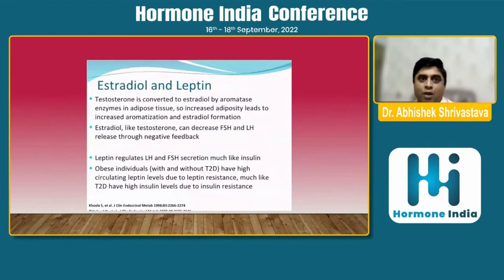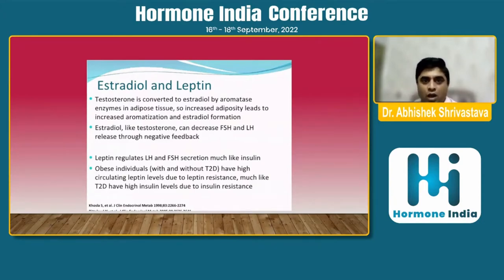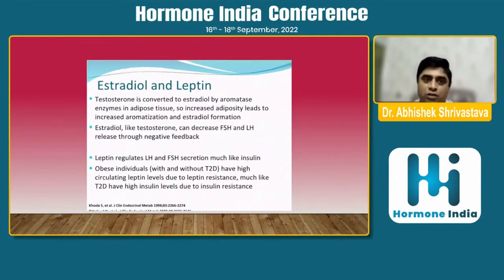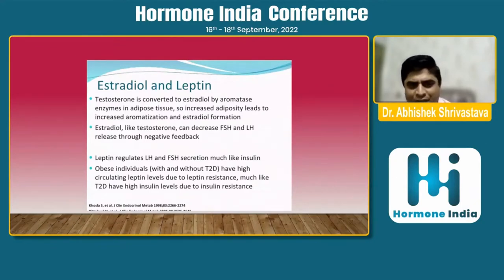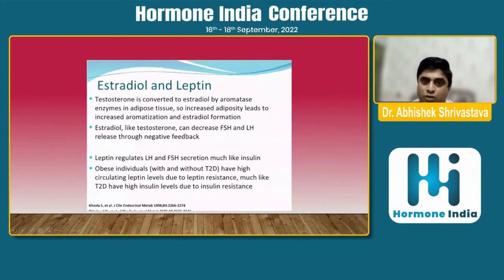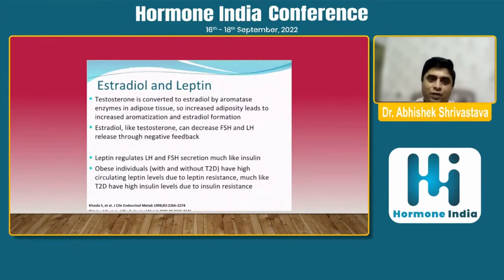Regarding estradiol and leptin: testosterone is converted to estradiol by aromatase enzymes in adipose tissue. Increased adiposity leads to increased aromatization and estradiol formation. Estradiol, like testosterone, can decrease FSH and LH release through negative feedback. Therefore, abdominal obesity can lead to low testosterone levels. Leptin regulates LH and FSH secretion much like insulin, and in obese individuals, high circulating leptin levels due to leptin resistance reduce testosterone levels. Both leptin resistance and insulin resistance can lead to low testosterone.